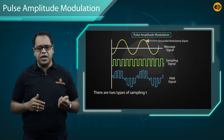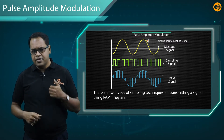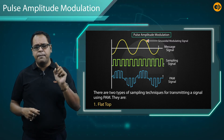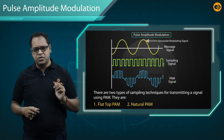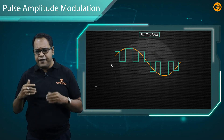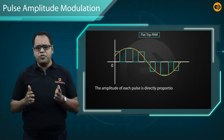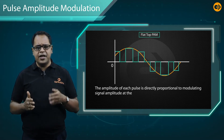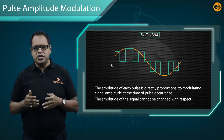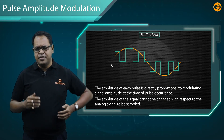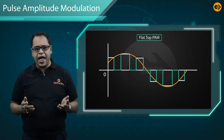There are two types of sampling techniques for transmitting a signal using PAM. Number one is Flat Top Pulse Amplitude Modulation, and the second is Natural Pulse Amplitude Modulation. In Flat Top PAM, the amplitude of each pulse is directly proportional to the modulating signal amplitude at the time of sampling. The amplitude of the signal cannot be changed with respect to the analog signal being sampled — they are stubborn, not changing.